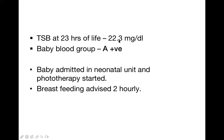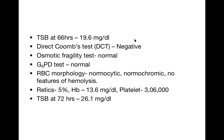Total serum bilirubin (TSB) at 23 hours of life was 22.3 mg/dL — normal TSB in a neonate should be less than 5 mg/dL, so this was very high. Baby's blood group was A positive; mother's was O positive — not matching. The baby was admitted to the neonatal unit and phototherapy was started, with breastfeeding advised every two hours. Repeat TSB at 66 hours was 19.6 mg/dL — slightly dropped. Direct Coombs test was negative.